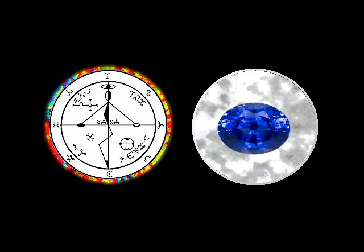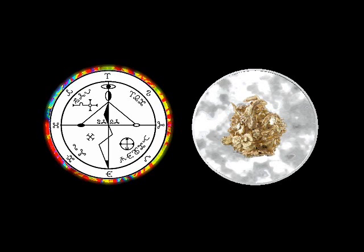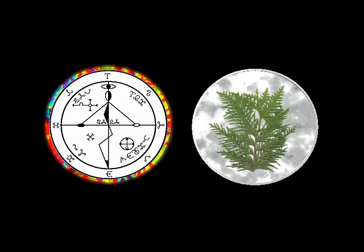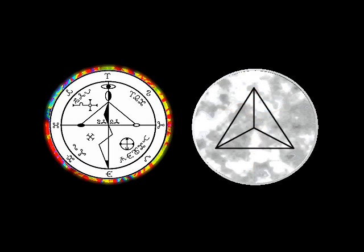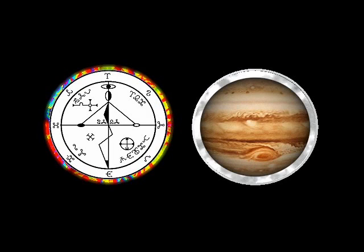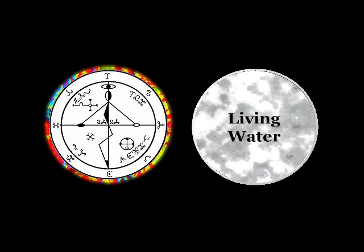Stone: Blue Sapphire. Metal: Electrum. Incense: Cedar. Image: Crucifixion, Crucified King. Symbol: Tetrahedron. Planet: Jupiter. Elemental Energy: Living Water.